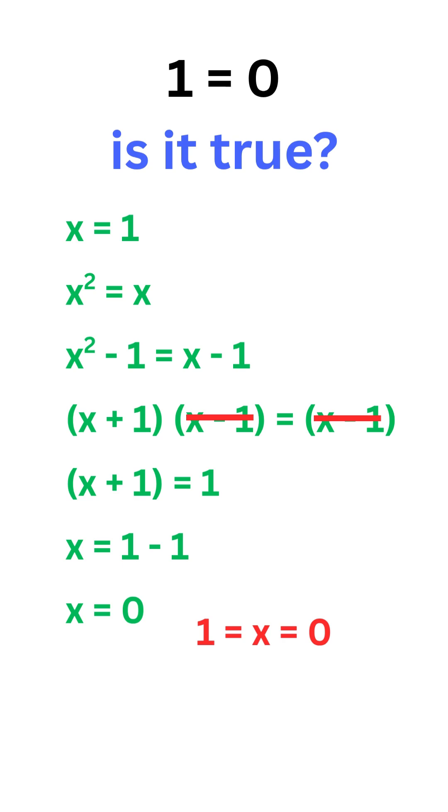Wait, let me explain. It's a paradox in mathematics with one hidden trick. In step 4, we cancelled out x minus 1 on both sides. If we zoom into it...